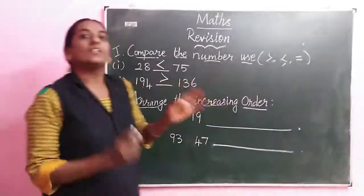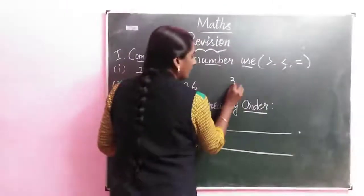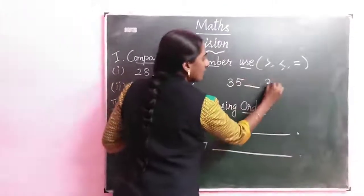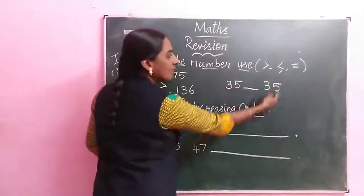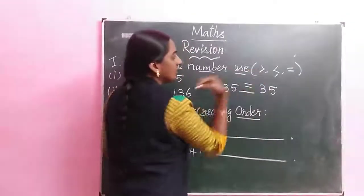So when do we use equal? Same side is a common number. For example, 35 dash 35. Look at the same side, it is the same number. So now we are using the symbol equal to.